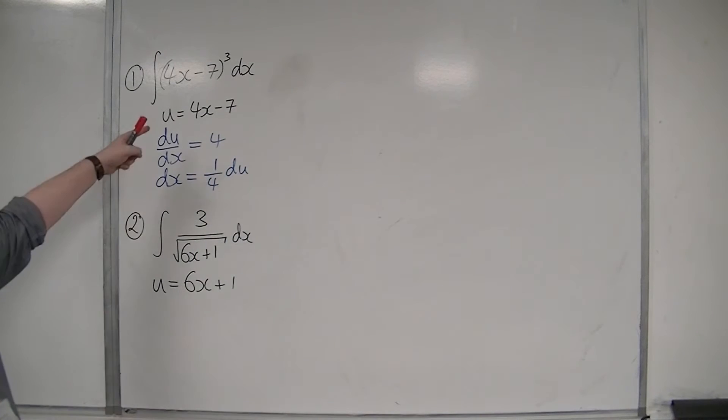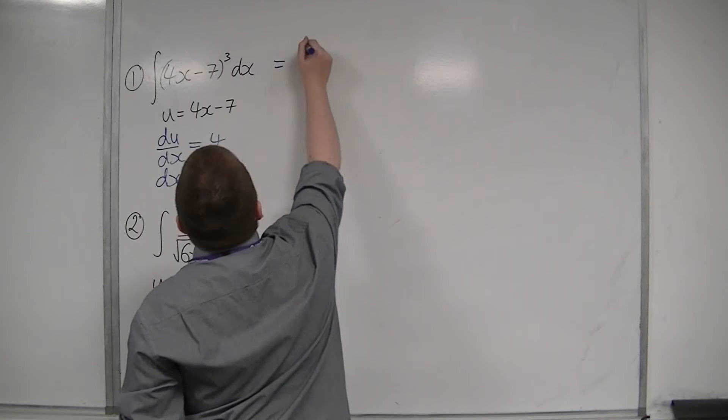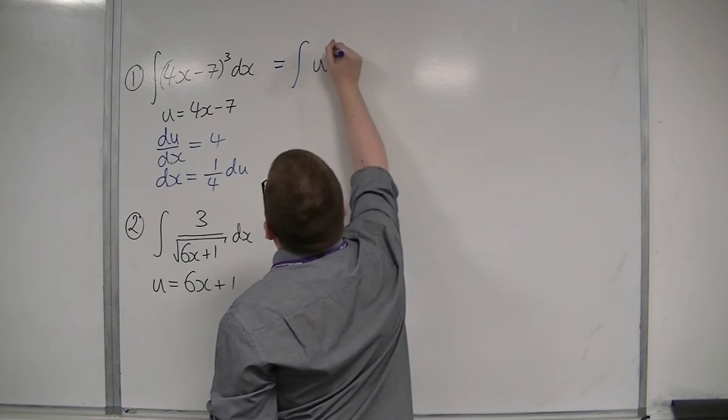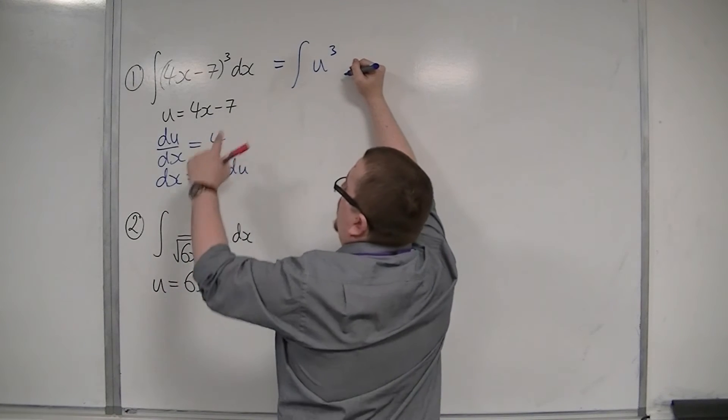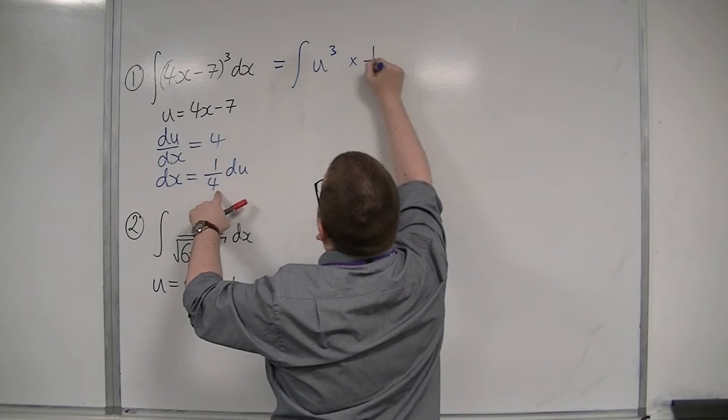So I now have a replacement for 4x minus 7, and a replacement for dx. So this is equal to the integral of u cubed, and dx is 1 quarter du.